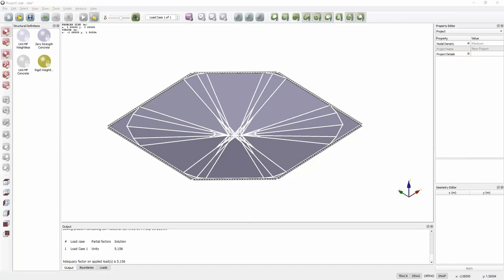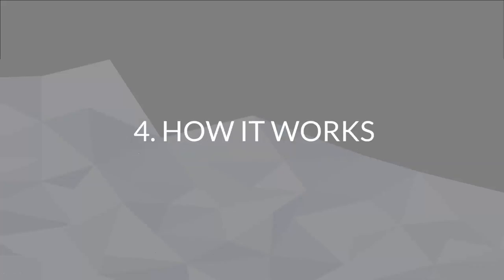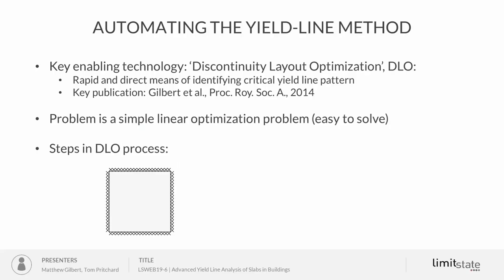How does it work in terms of theory? The software uses something called Discontinuity Layout Optimization, or DLO for short. It's a relatively recent method — the key publication was in the Proceedings of the Royal Society in 2014, with a follow-up paper in The Structural Engineer about six months later. The key thing is it boils down to a simple linear optimization problem, which is why we can solve problems very quickly.